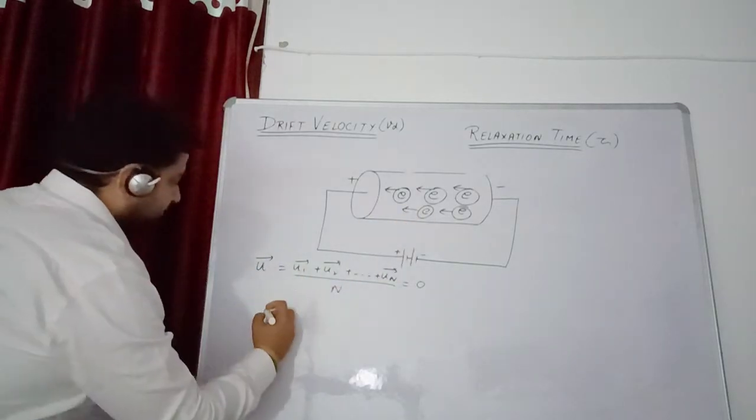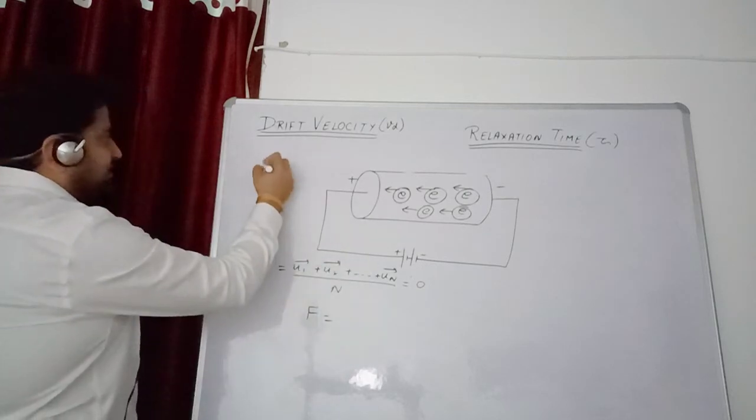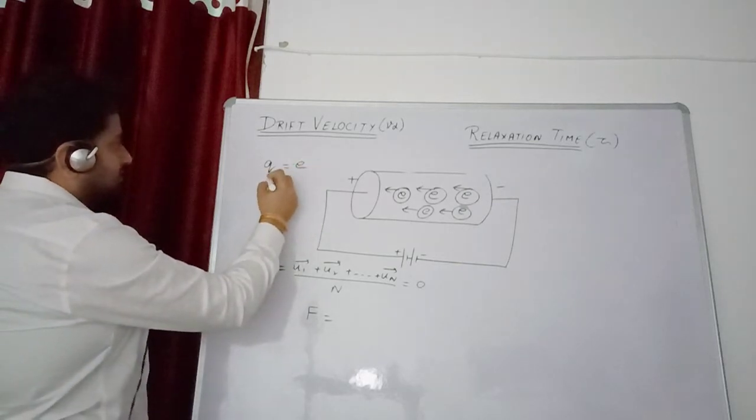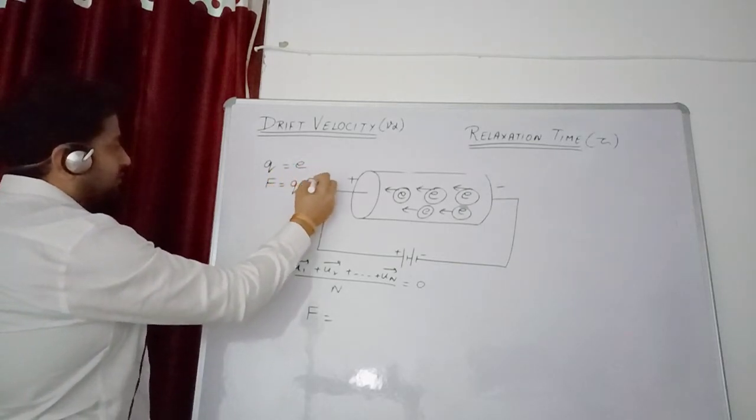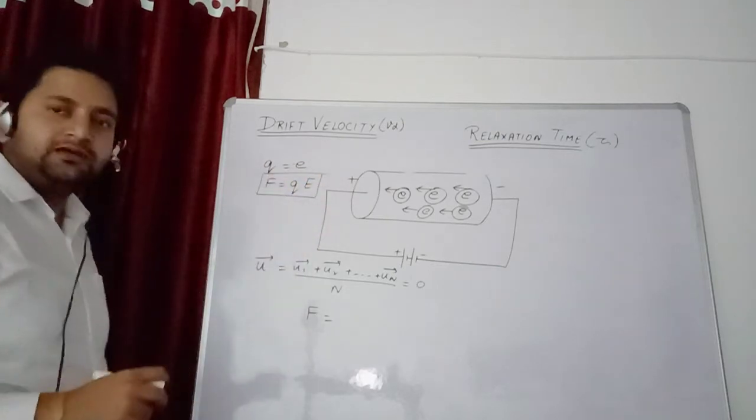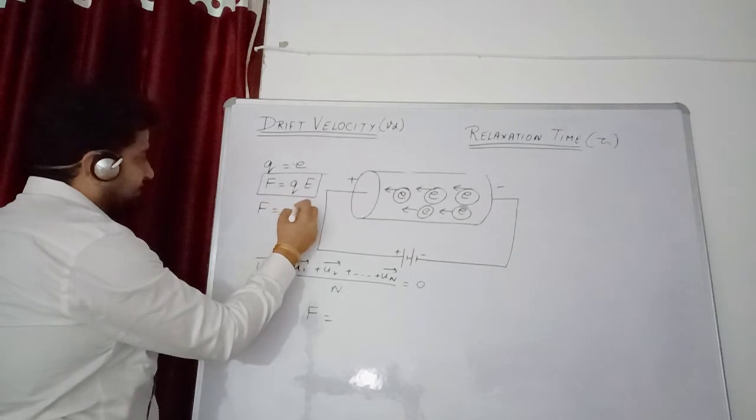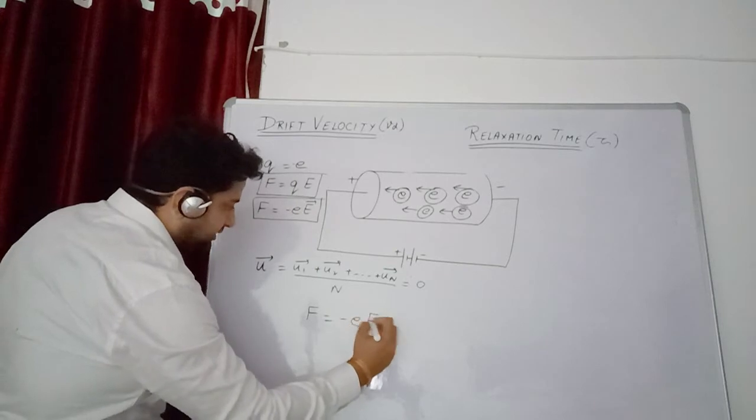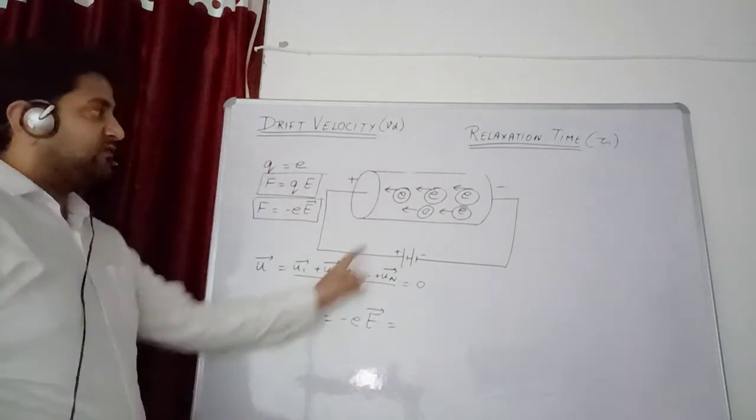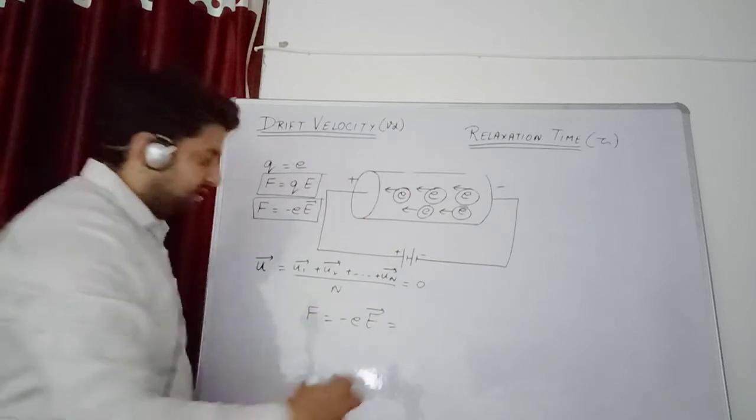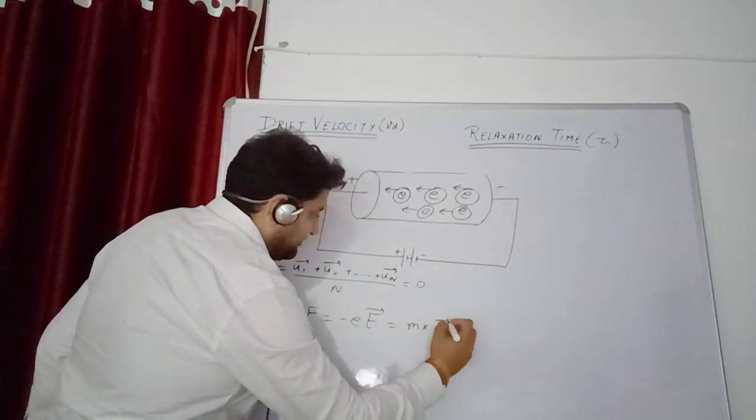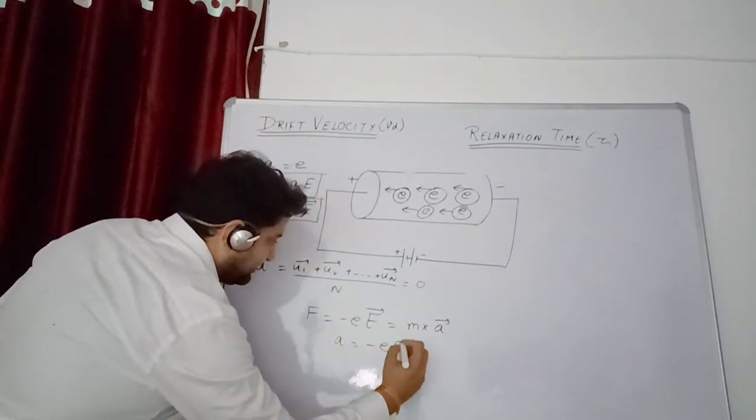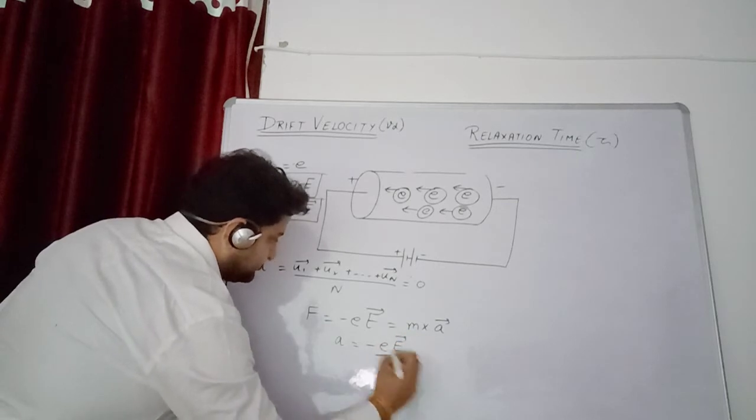Some directions are positive, some are negative, so they cancel out, so net velocity will be 0. Initial velocity is 0. I know that charge on electron is e, so force formula is force equals q into e. Here the formula becomes f equals minus e into e vector.